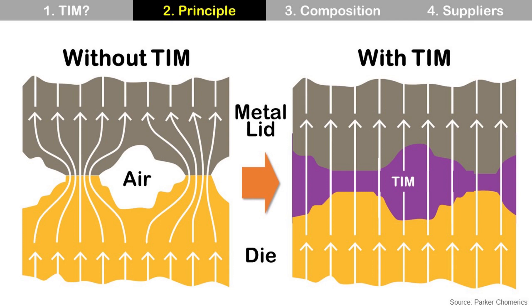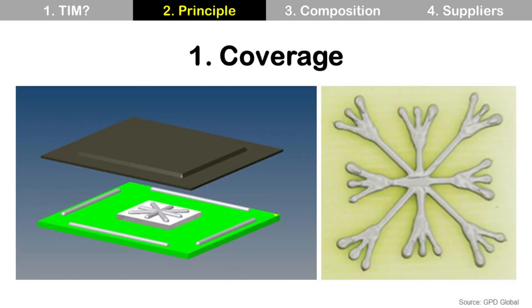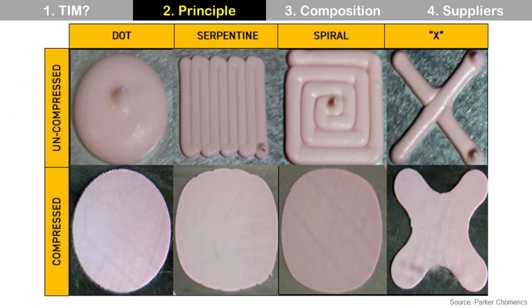There are three key items to manage very carefully. The first one is coverage. TIM should cover all of the die backside as much as possible. In that way, it can secure more thermal conduction paths and dissipate heat more effectively. There are many TIM dispensing patterns to achieve better coverage. One example is the snowflake pattern, and others are also used as well. Here are other dispensing patterns and their coverage.